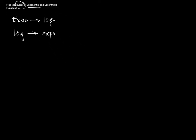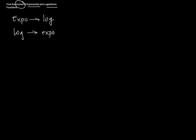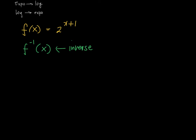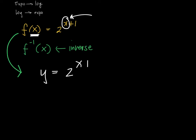Let's show one example. Suppose you are given the function f(x) = 2 raised to x plus 1 and you want to find the inverse. The inverse notation is written as f with a superscript negative 1. The first step is to replace f(x) by y temporarily, so that you won't be confused with the x in the exponential expression. You then have 2 raised to x plus 1.